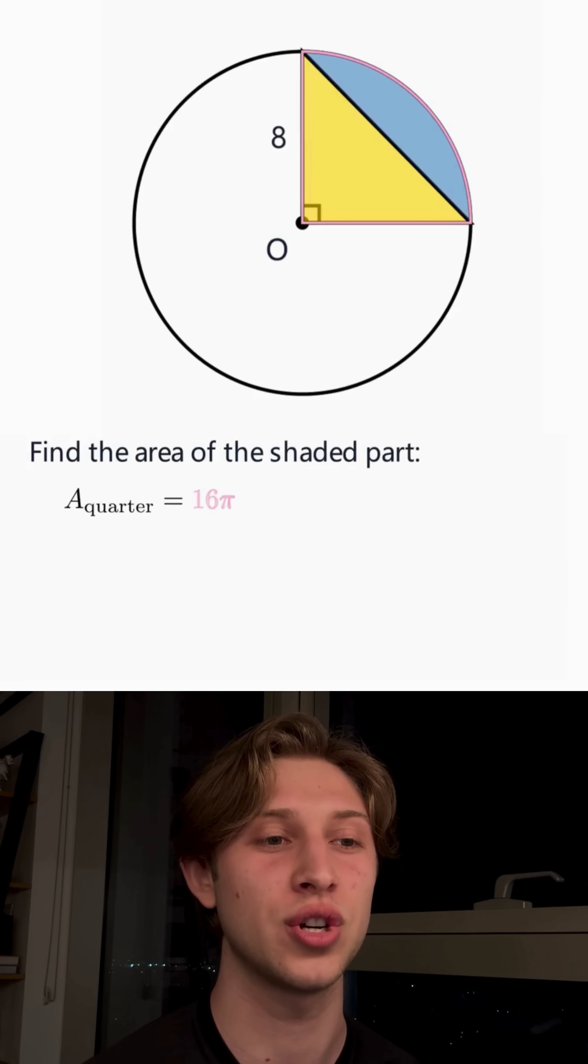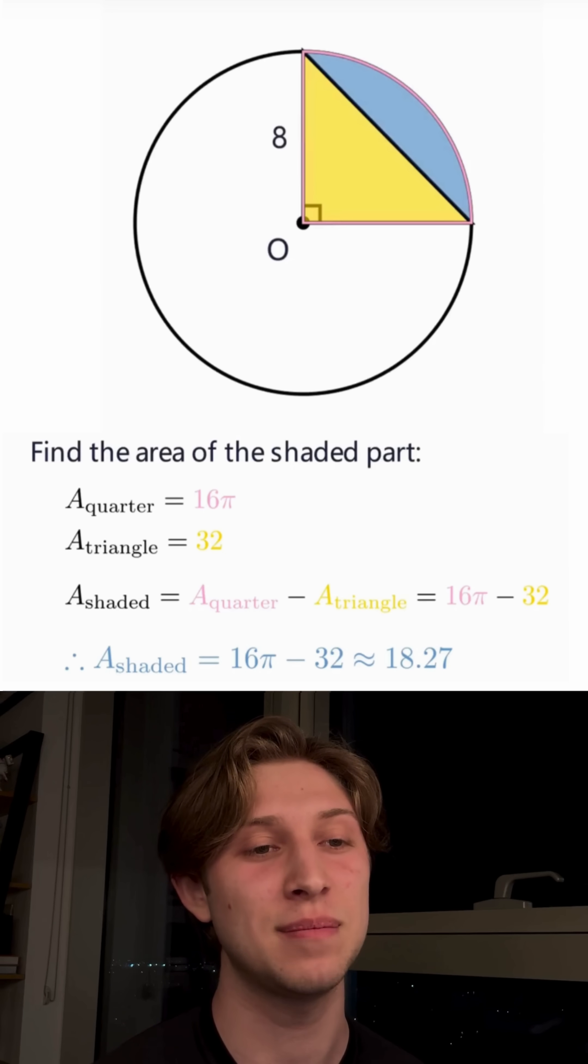The quarter circle is shown in pink with area 16 pi. The yellow triangle has an area of 32. So the area of the blue shaded part is 16 pi minus 32, which is approximately 18.27 square units.